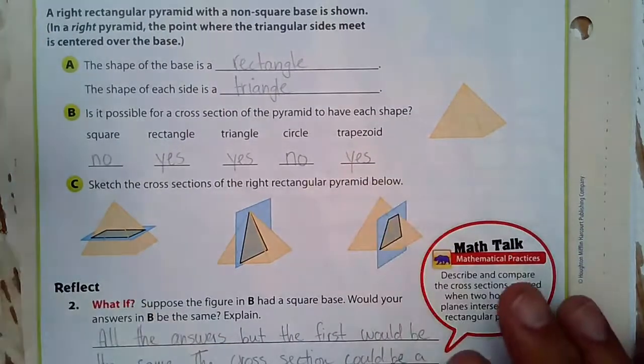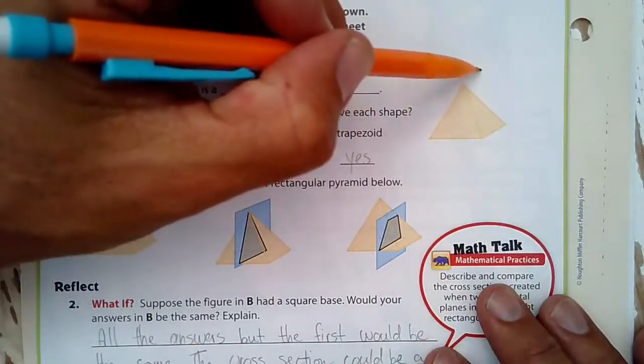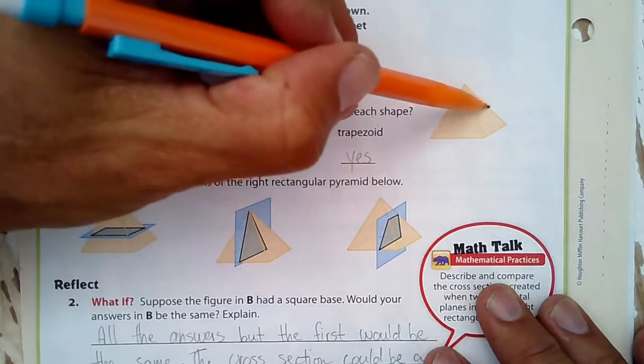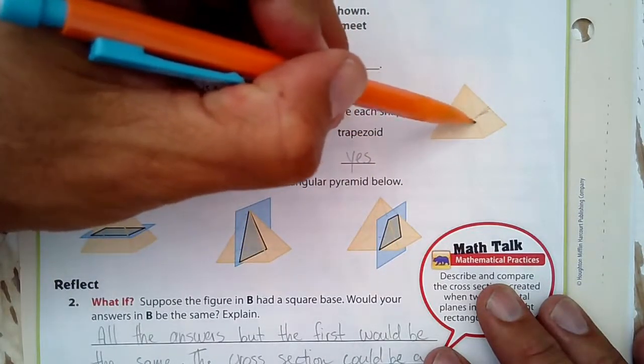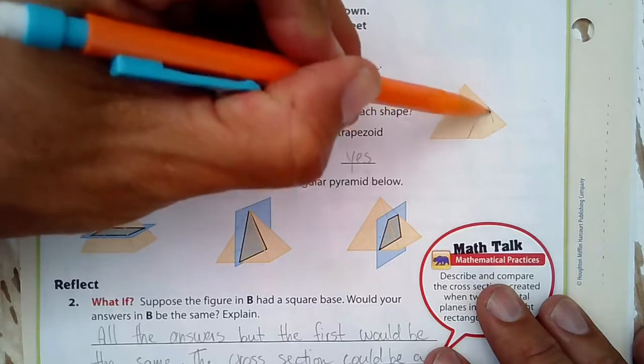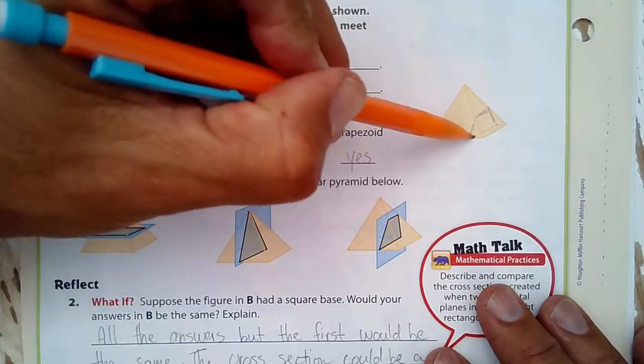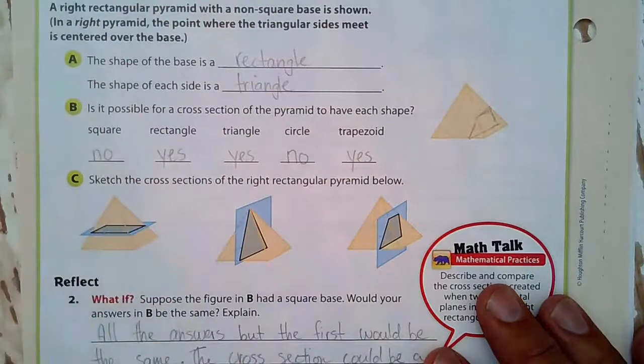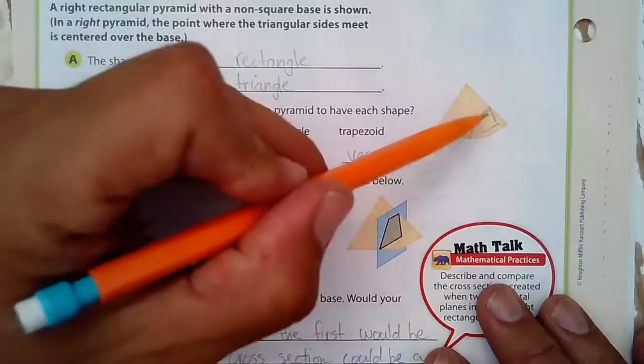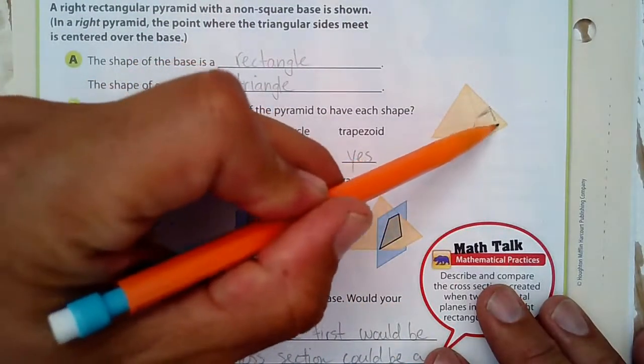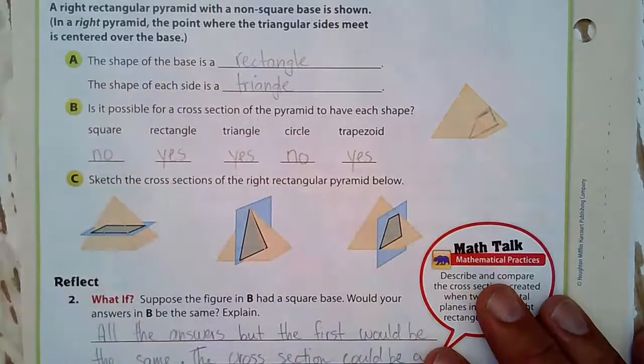Could I get a trapezoid? I could get a trapezoid if I sliced it straight down like this, giving me something like this. It doesn't look very trapezoid-ish, but a trapezoid has four sides where two sides are parallel and those two sides would be parallel, the top and the bottom.